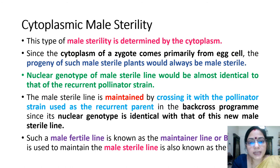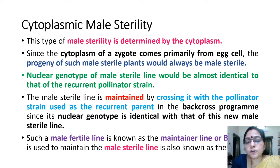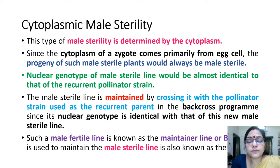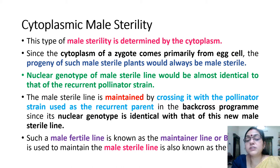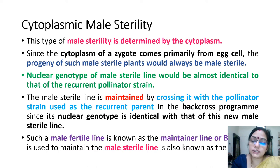Now, cytoplasmic male sterility: this type of male sterility is determined by the cytoplasm. Since the cytoplasm of a zygote comes primarily from the egg cell, the progeny of such a male plant would be male sterile. The nuclear genotype of the male sterile line would be almost identical to that of the recurrent pollen strain. The male sterile line is maintained by crossing it with the pollinator strain used as the recurrent parent in the backcross program.